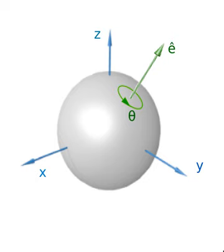Unit quaternions, or versors, are in some ways the least intuitive representation of three-dimensional rotations. They are not the three-dimensional instance of a general approach. They are more compact than matrices and easier to work with than all other methods, so are often preferred in real-world applications. A versor, also called a rotation quaternion, consists of four real numbers constrained so the norm of the quaternion is 1. This constraint limits the degrees of freedom of the quaternion to 3, as required.